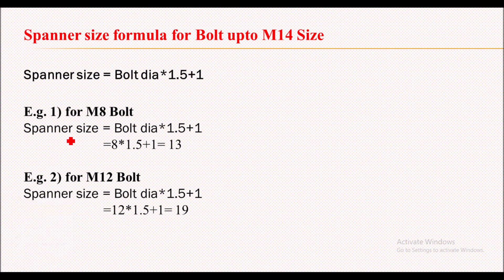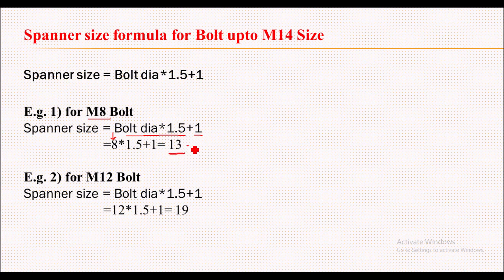Now let's see some examples. Suppose my bolt size is M8, then spanner size = bolt dia × 1.5 + 1. Here bolt dia is 8, so 8 × 1.5 + 1 = 13. So 13 will be the spanner required for an M8 bolt. Similarly, for an M12 bolt, 19 will be the required spanner. This formula is suitable for bolts up to M14 size.